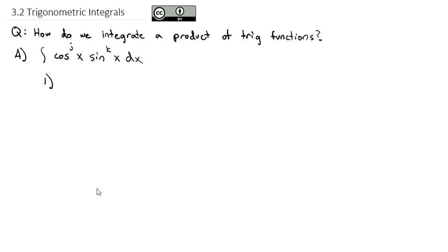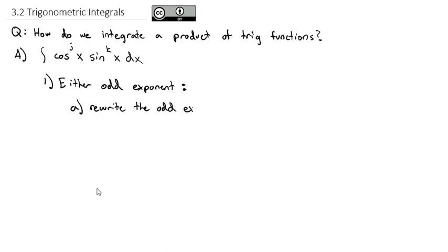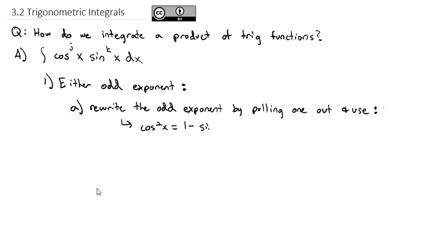The first case we're going to look at is if either has an odd exponent — if j or k are odd. Our strategy will be to rewrite the odd exponent by pulling one out, and use the fact that cosine squared of x is 1 minus sine squared of x, or similarly, sine squared of x is 1 minus cosine squared of x. For example, if we want to integrate cosine cubed of x times sine squared of x dx.